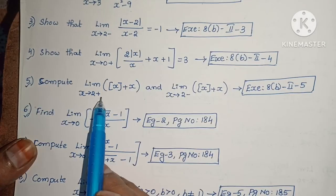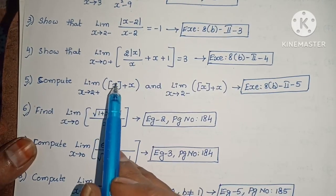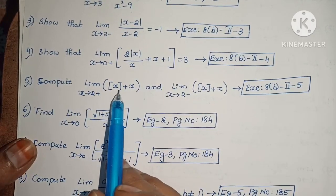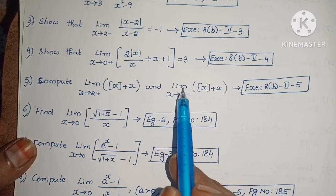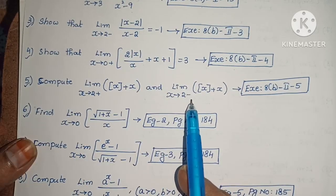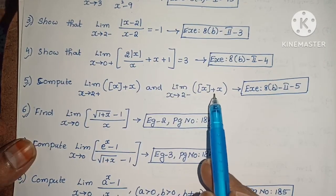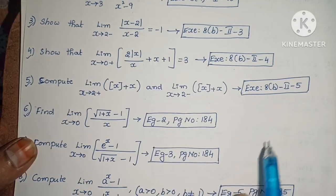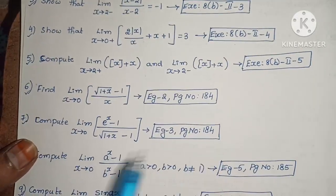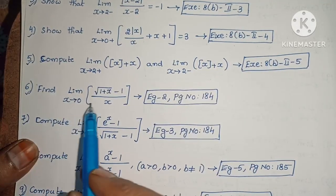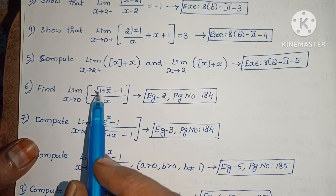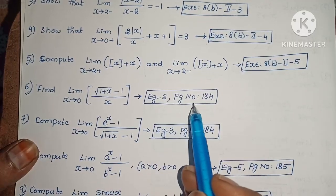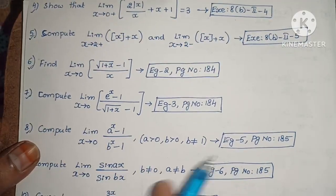Next: Compute limit extends to 2 plus of the greater integer function of x plus x, and limit extends to 2 minus of greater integer function of x plus x. Exercise 8, second roman law, 5th one. Next: Find limit extends to 0 of root of 1 plus x minus 1 by x. Example 2, page number 184.